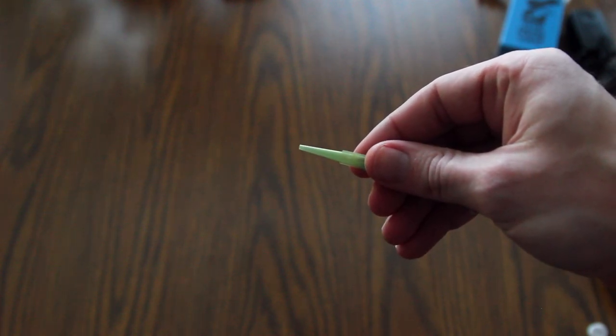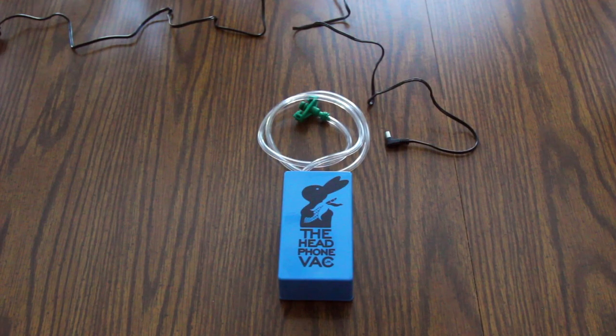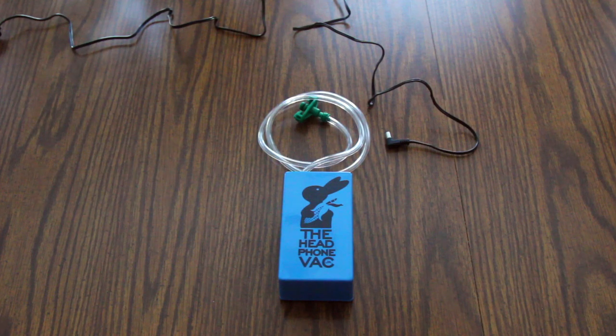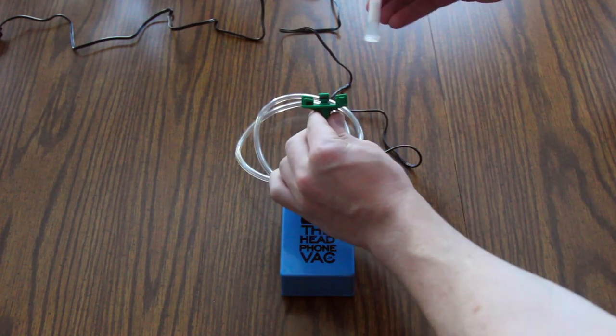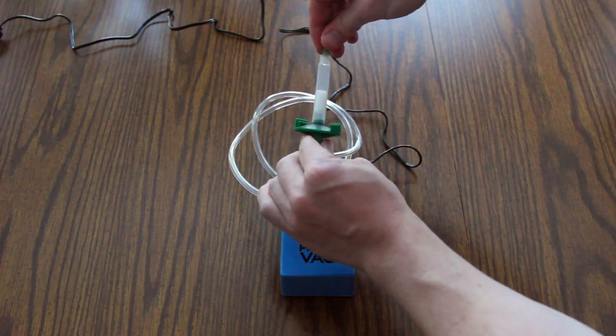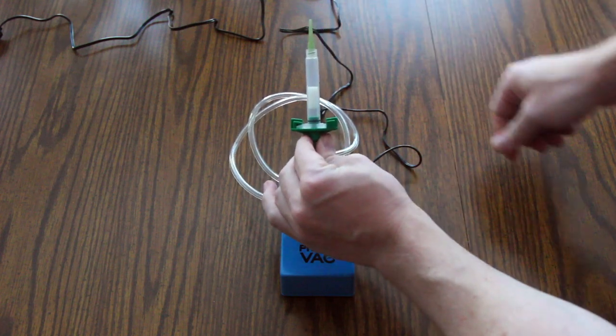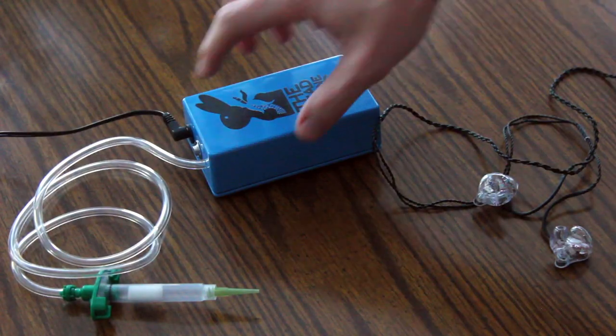In order to use the headphone vac jr, simply connect it to power, attach the needle, attach the tip you want to use, and finally turn the power on.